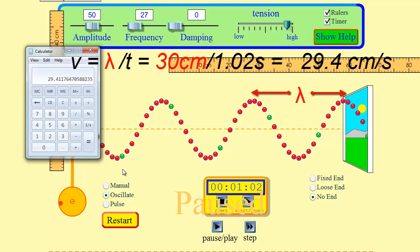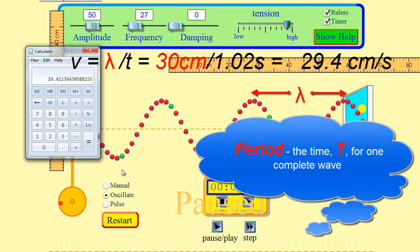And all I used was distance over time except instead of distance I used a specific dimension of the wave known as the wavelength. And instead of a general time I used the time it takes for one complete wave to pass which is also known as the period. And for that instead of using lowercase t we use a capital T.